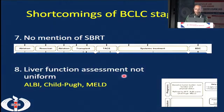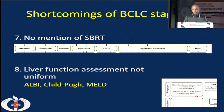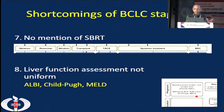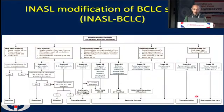The liver function assessment in BCLC recommends using either ALBI score, Child-Pugh score, or MELD score. This introduces a lot of heterogeneity — some centers use MELD score, some use Child-Pugh score. When we conduct trials, there will be significant heterogeneity and results will not be comparable.